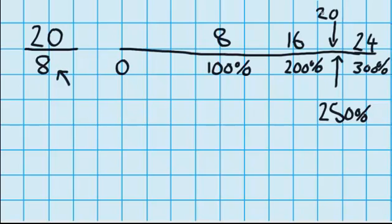So, you can see that 20 slices is the same as 250%. And I know it seems strange seeing a percentage which is more than 100, but all it means is they've eaten more than one whole. In fact, in this case, they've eaten more than two whole pizzas, but less than three whole pizzas.